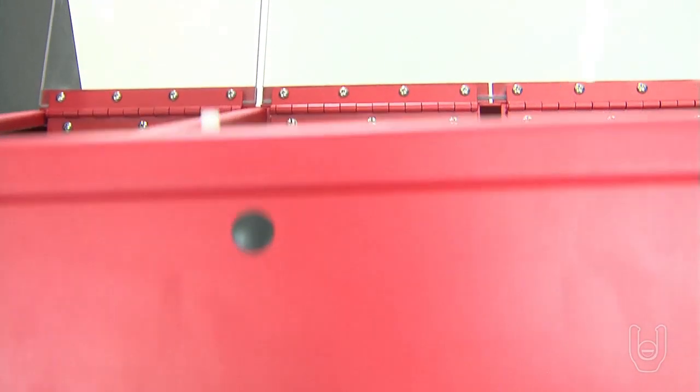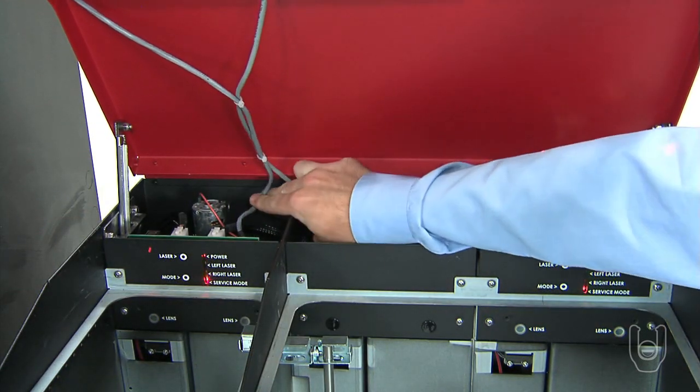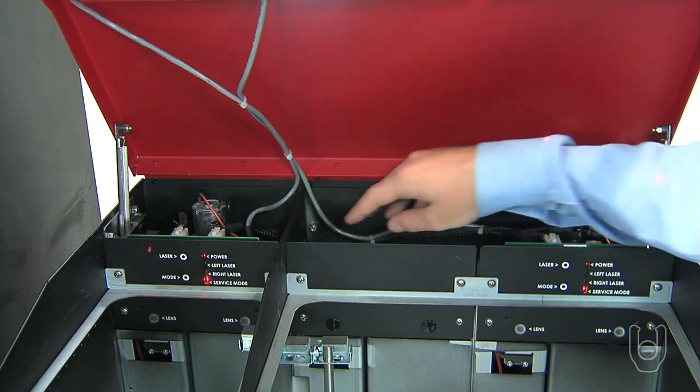Once the cables are installed, make sure the cables are clear of any moving parts within the cabinets, especially the lifter assemblies in each of the cabinets.